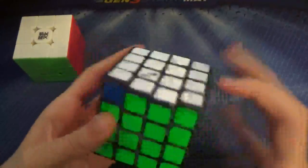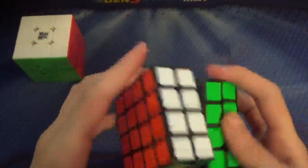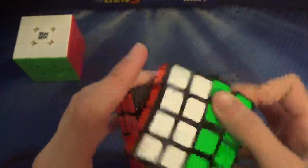The next event is 4x4. This is the QiYi Wuque. Average-wise, I don't really care, maybe just PB. It's a 40.8, but I'm really just looking for single this time.